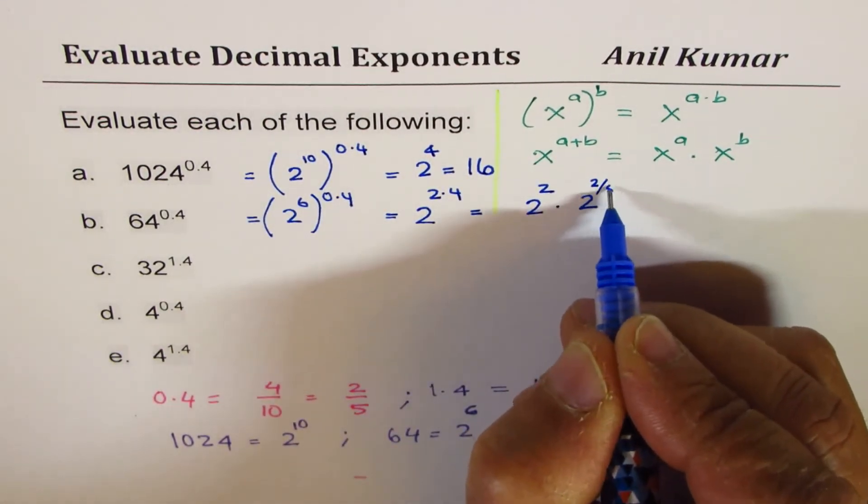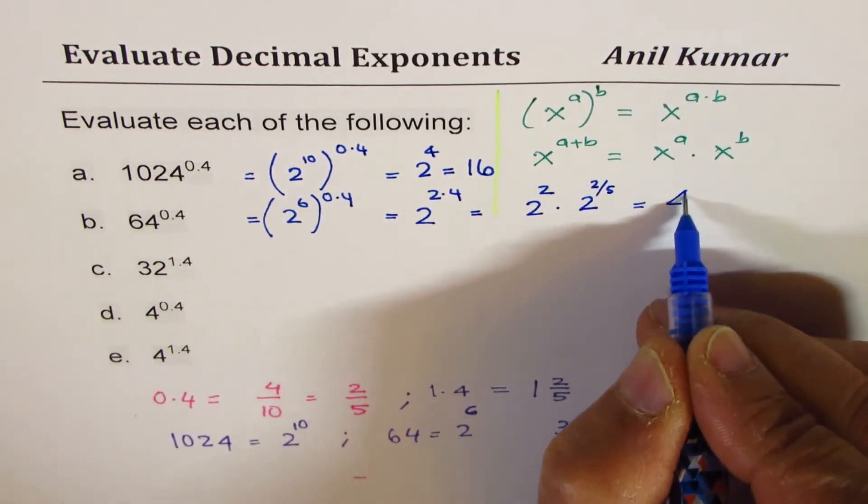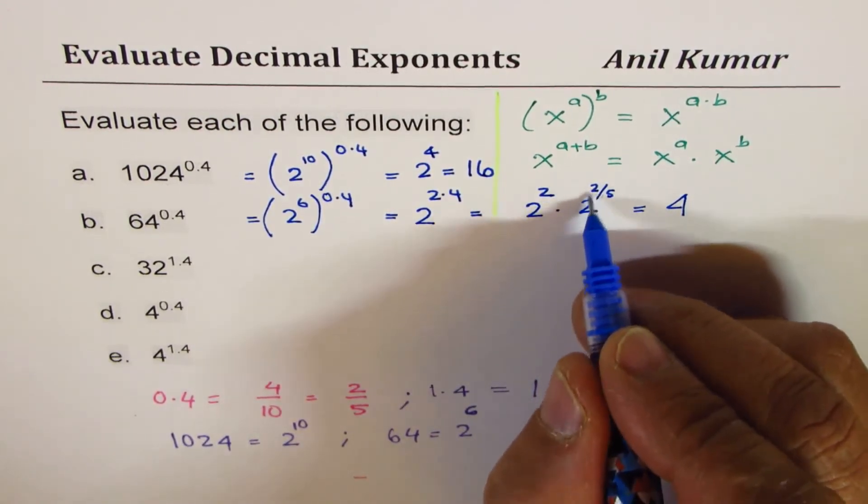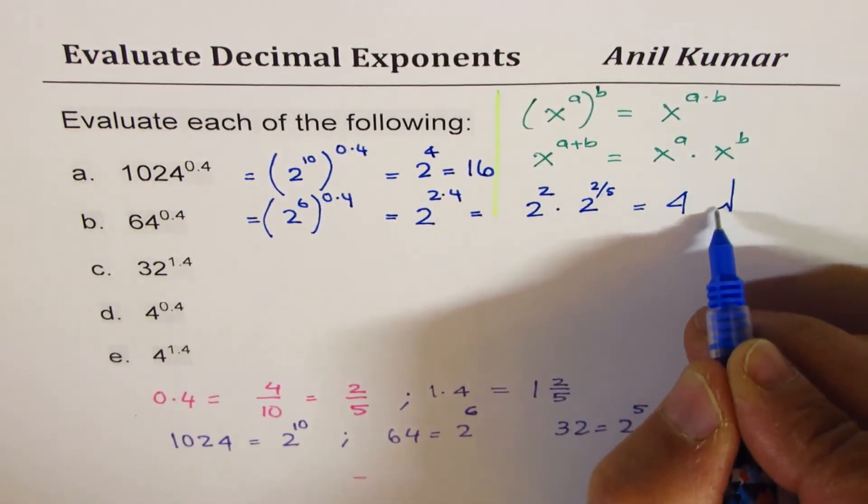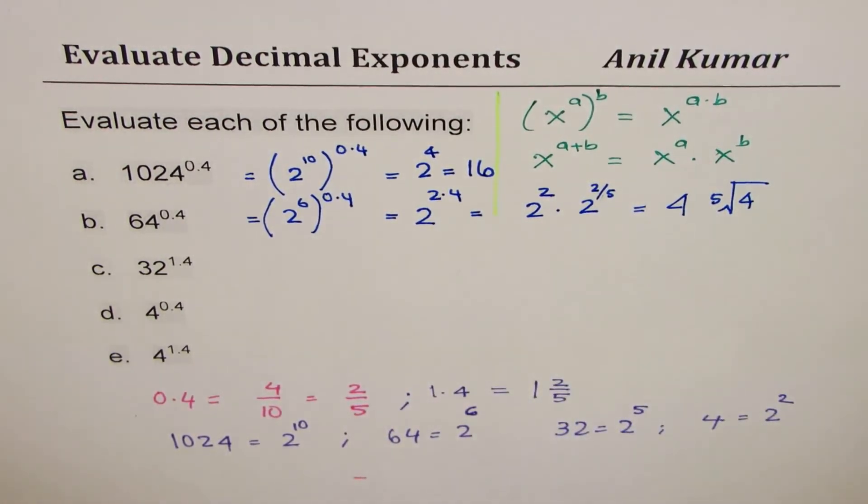2 to the power of 0.4 really means 2 over 5. Which you could write as 2 squared is 4. And this portion, 2 squared is 4. So you can write 5th root of 4, which is 2 squared. You could do something like this to get to the result. I hope it makes some sense.